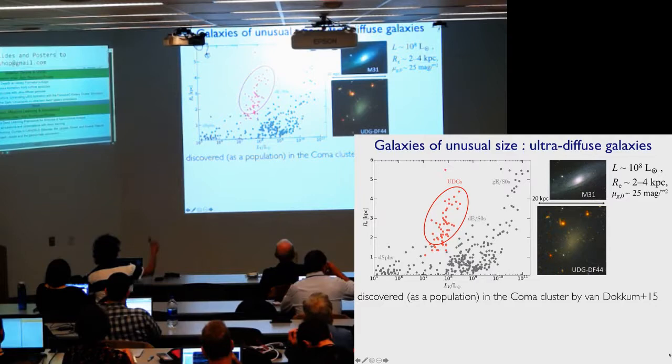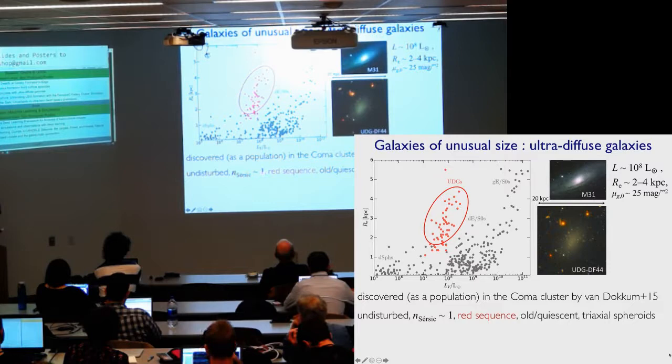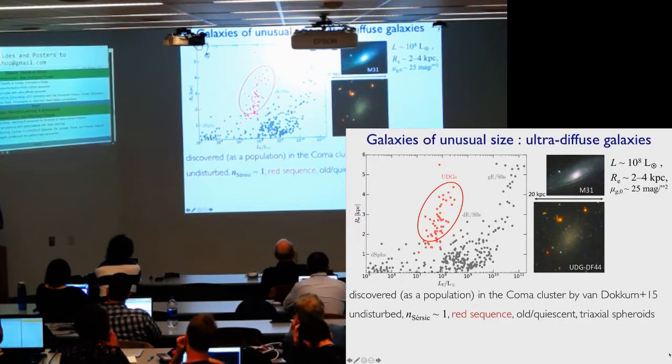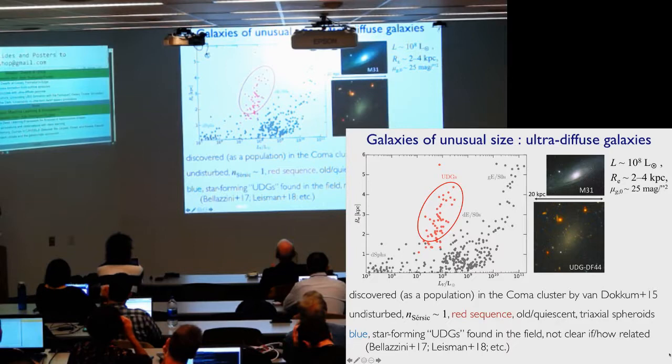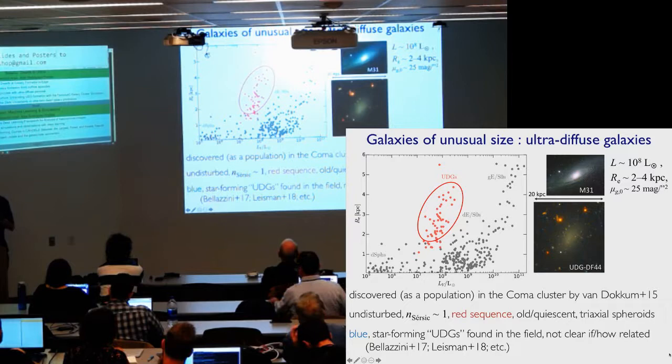Some of the basic properties: these are not disturbed disrupting systems. They seem to be pretty well relaxed, Sérsic indices of one or a little less, red sequence, old quiescent spheroidal, triaxial or prolate-type objects, at least in the Coma cluster. There are a lot of work done on what's also called UDGs in the field that are blue and star-forming low surface brightness dwarfs that fit in the same part of parameter space, but it's not clear those are at all the same objects. There's more than one way to end up as a low surface brightness galaxy.